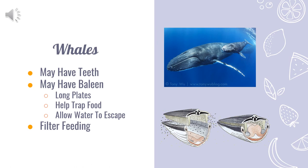Whales can have teeth, but most have a material called baleen. Baleen is a type of long plate-like material that are stacked against each other, allowing whales to use a process called filter feeding. The whale takes a big gulp of water and holds it in its mouth. The whale then shuts its mouth, leaving a gap for its teeth to show. It then pushes the water through the baleen, but the food can't get out because the spaces between the baleen are too small. Then it closes its mouth and swallows.